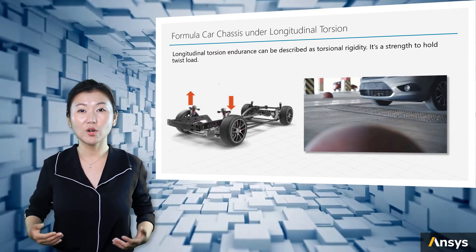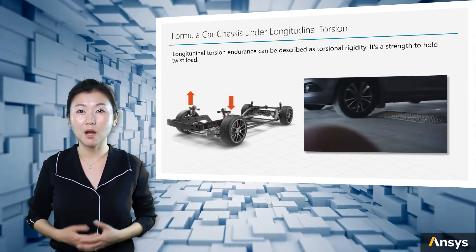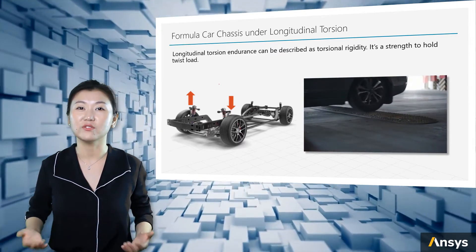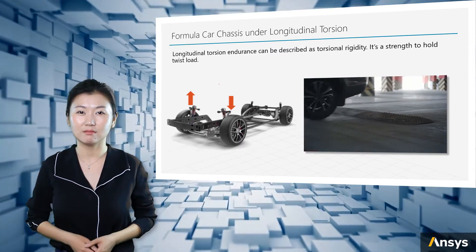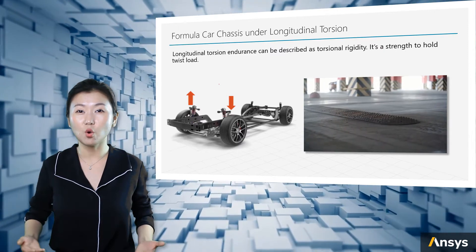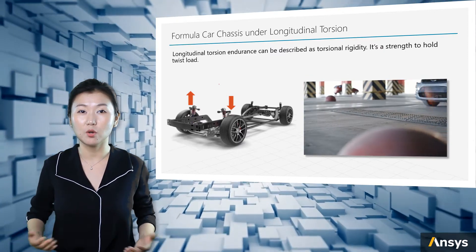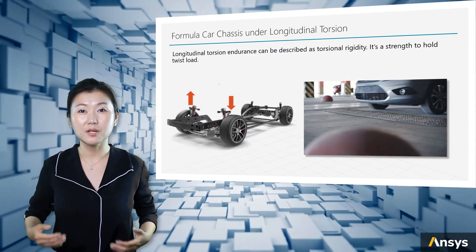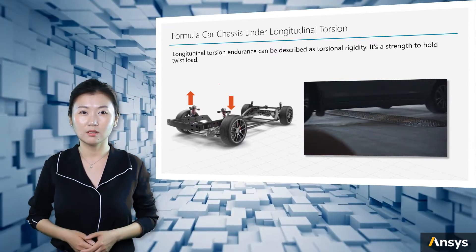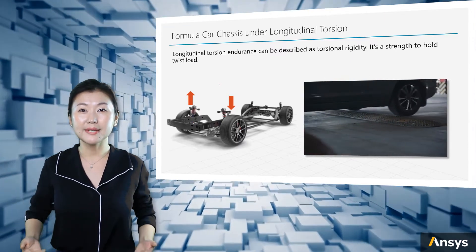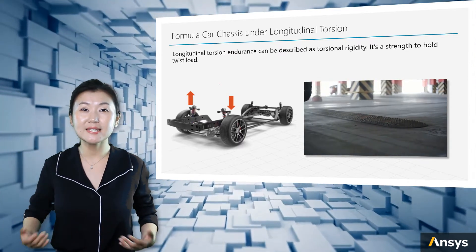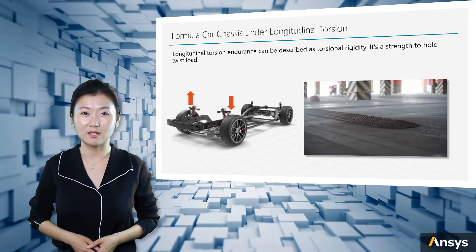The vehicle front tires go upside because of a bump, and it's considered a critical condition for the front chassis. Torsional rigidity shows how much torque is needed to deform a component, and it is a determinant of frame performance of cars. A common test of torsional rigidity of a car is to apply a static torsional condition to the chassis.